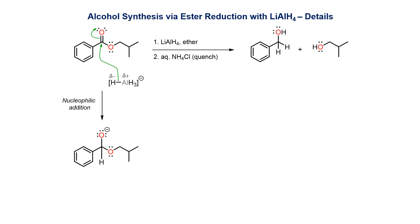In the first step of the reduction, nucleophilic hydride attacks the carbonyl and creates a tetrahedral intermediate. As well as swapping a pi bond for a stronger sigma bond, the unstable electron density from hydride has been transferred to the more electronegative oxygen atom.